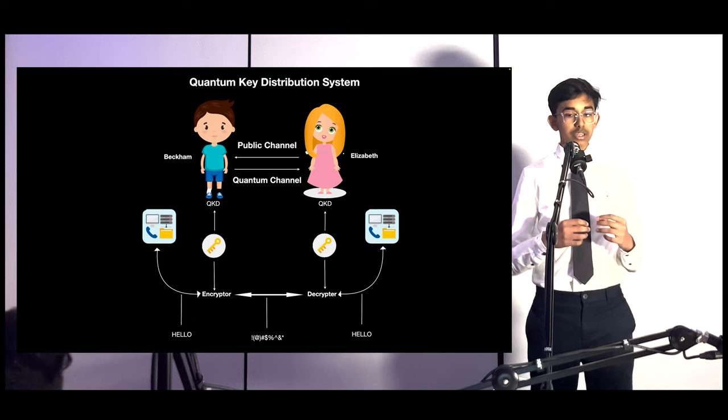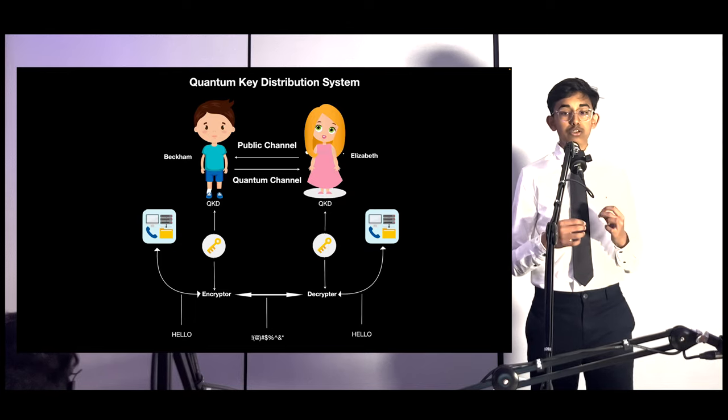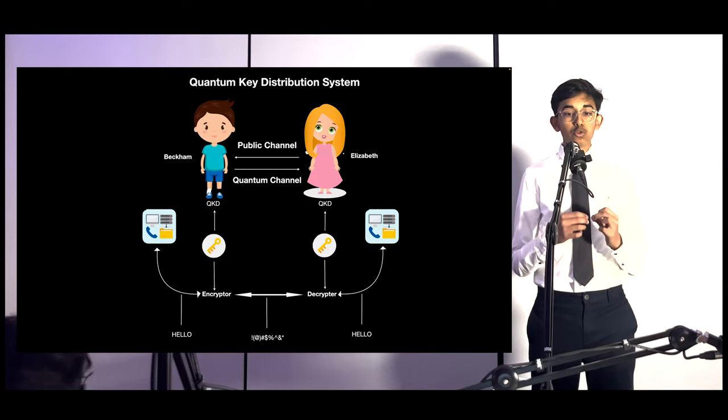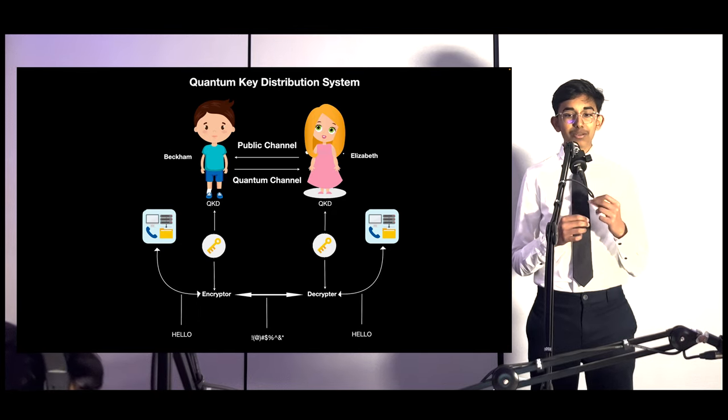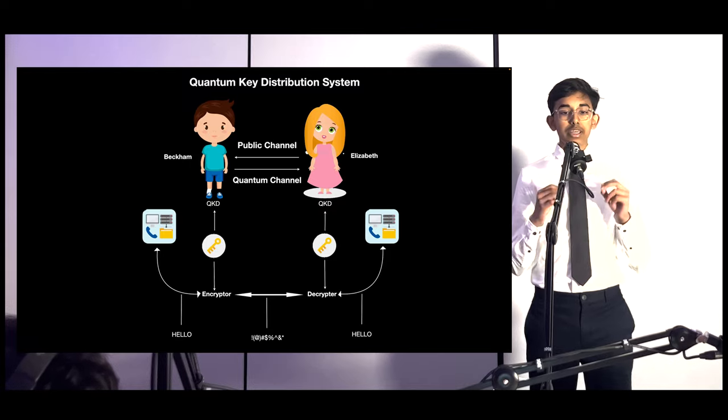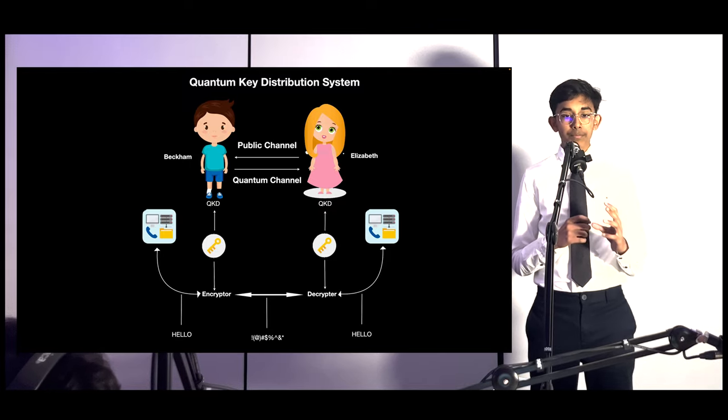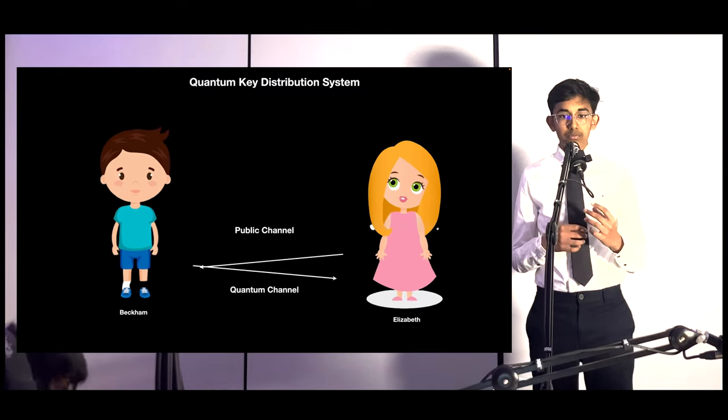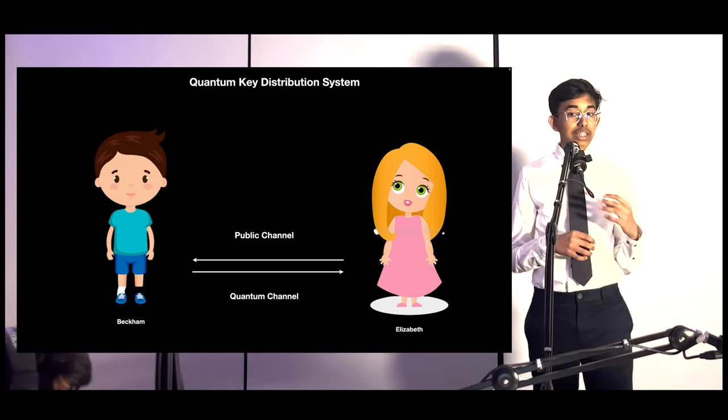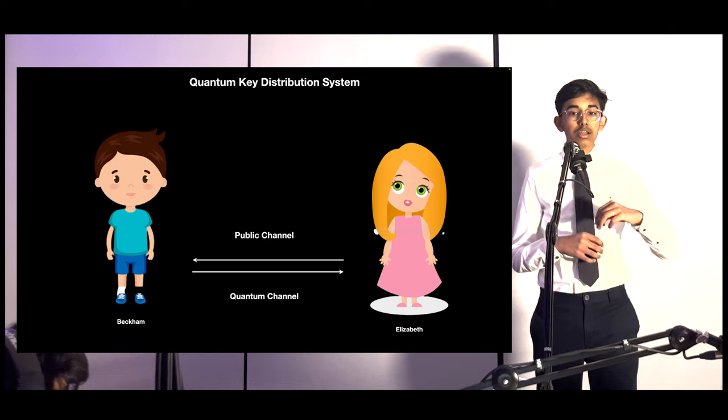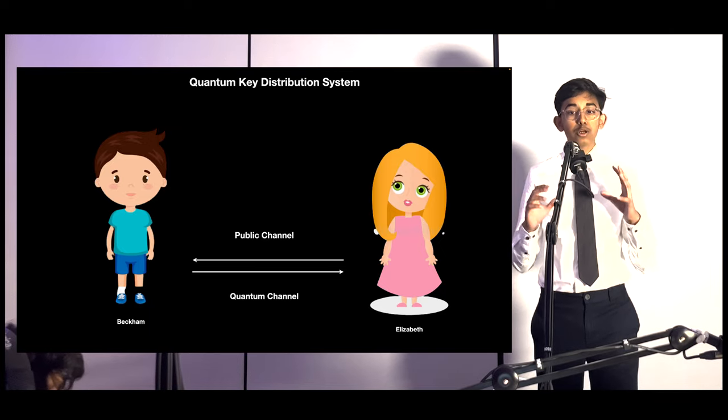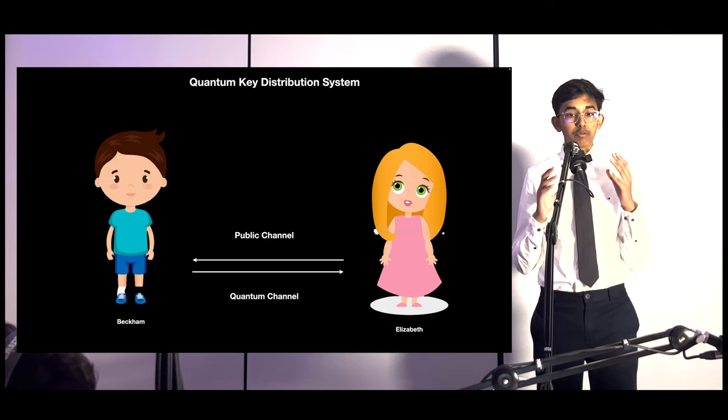Quantum key distribution, QKD, utilizes quantum entanglement to generate a shared key between two parties, such as Elizabeth and Beckham. By measuring entangled particle properties, they create a key known only to them. Elizabeth and Beckham use a public channel to exchange classical information like measurement results or error correction data. This channel can be any communication medium transmitting classical information.